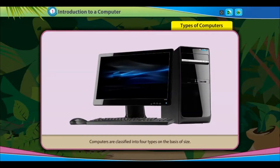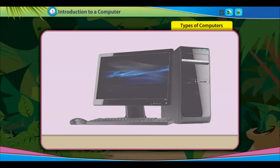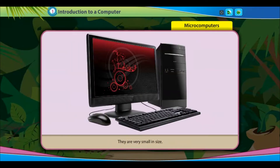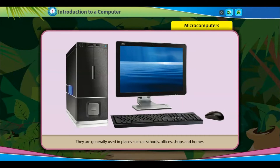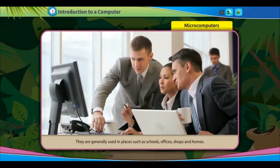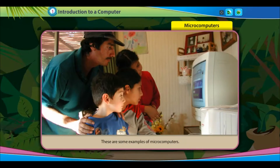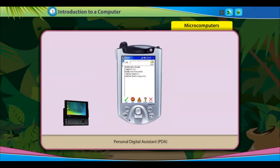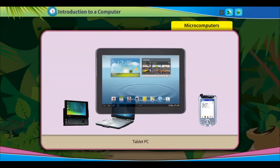Types of Computers. Computers are classified into four types on the basis of size. Microcomputers are the most commonly used computers. They are very small in size and are also known as personal computers or PCs. They are generally used in places such as schools, offices, shops, and homes. Examples of microcomputers include handheld computers, palmtops, personal digital assistants (PDAs), laptops, and tablet PCs.